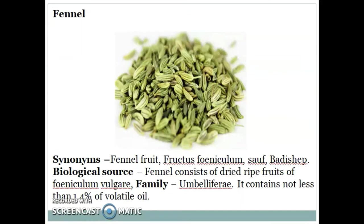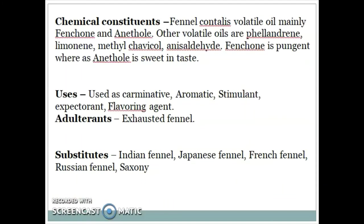Next is Fennel. Synonym: fennel fruit, fructus foeniculi. Biological source: fennel consists of dried fruits of Foeniculum vulgare, family Umbelliferae. It contains not less than 1.5% of volatile oil. Chemical constituents: fennel contains volatile oil, mainly fenchone and anethole. Other volatile oil components are phellandrene, limonene, methyl chavicol, and anisaldehyde. Fenchone is pungent, whereas anethole is sweet in taste. It is used as a carminative, aromatic, stimulant, expectorant, and flavoring agent.